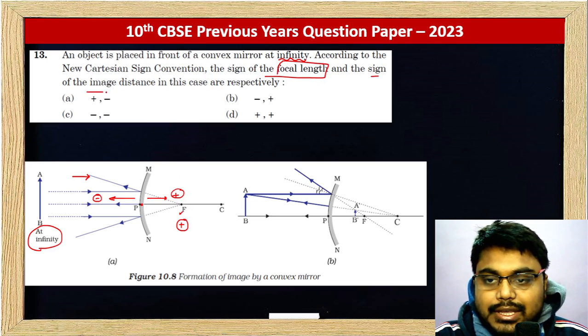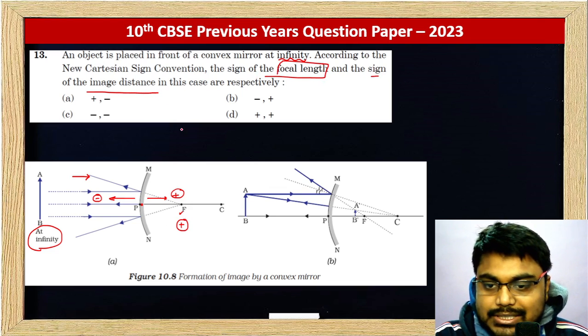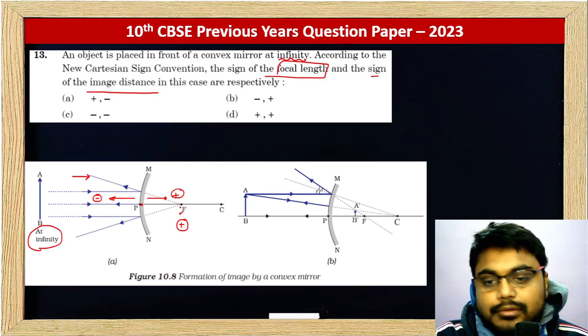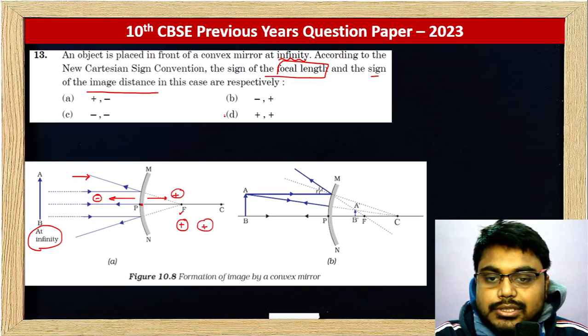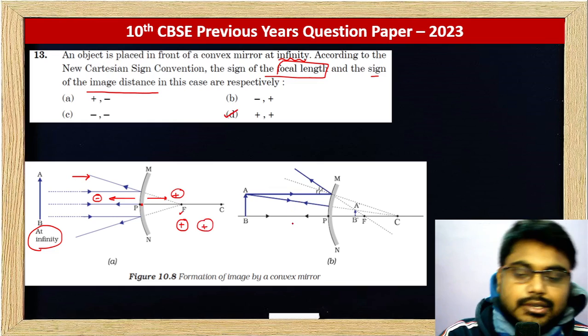And the sign of the image distance, image distance v, that is again positive. So in both cases it's positive, therefore it's d. Thank you.